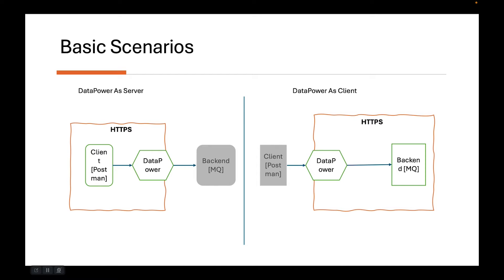On the right hand side, you see a scenario where DataPower is acting as a client. For example, you have a multi-protocol gateway on DataPower and it is trying to connect with a backend service — maybe an MQ, an IIB service, or anything. In this case, if it uses protocols like HTTPS, then this is a use case where DataPower is acting as a client. Once we understand these basic scenarios, we can understand how they are supported in DataPower.